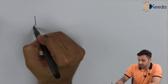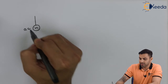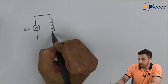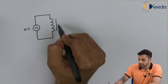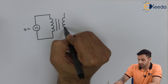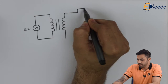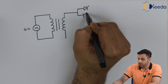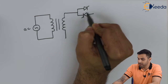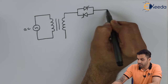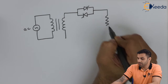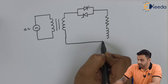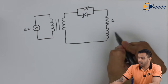Let's say this is an AC voltage source. I am connecting the same source with the primary coil of a transformer, and the secondary coil is connected with two thyristors in parallel, in opposite directions, with a resistive and an inductive load. Let's say this is R and this is L.